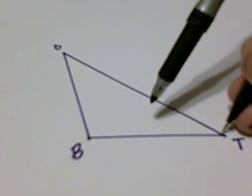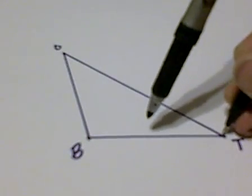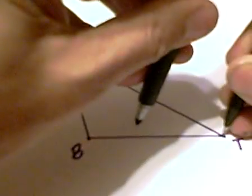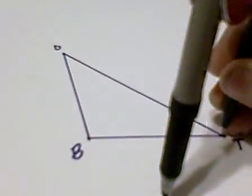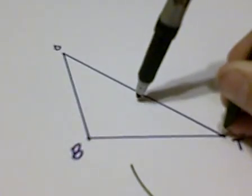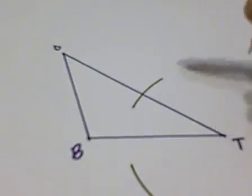So I'll start with side BT, and from each end of segment BT, I'm going to strike an arc above and below to construct perpendicular bisectors.